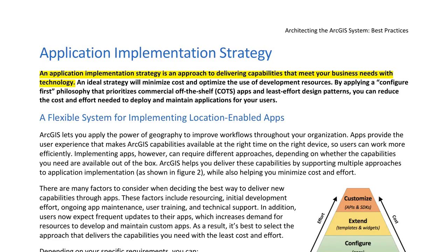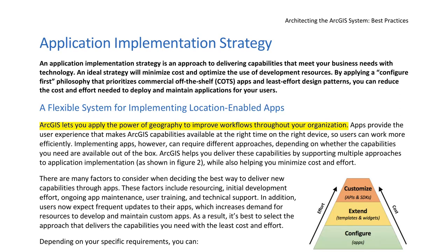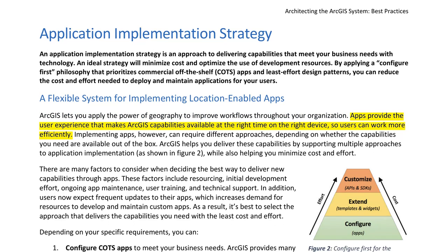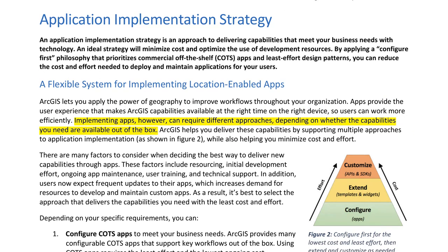Application Implementation Strategy. An application implementation strategy is an approach to delivering capabilities that meet your business needs with technology. An ideal strategy will minimize cost and optimize the use of development resources. By applying a configure-first philosophy that prioritizes commercial off-the-shelf (COTS) apps and least-effort design patterns, you can reduce the cost and effort needed to deploy and maintain applications for your users.